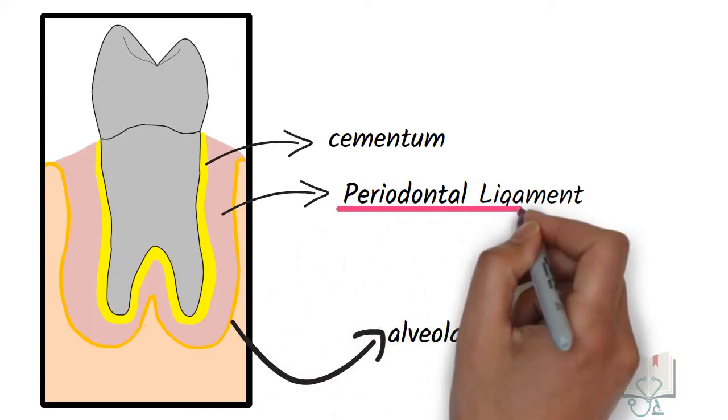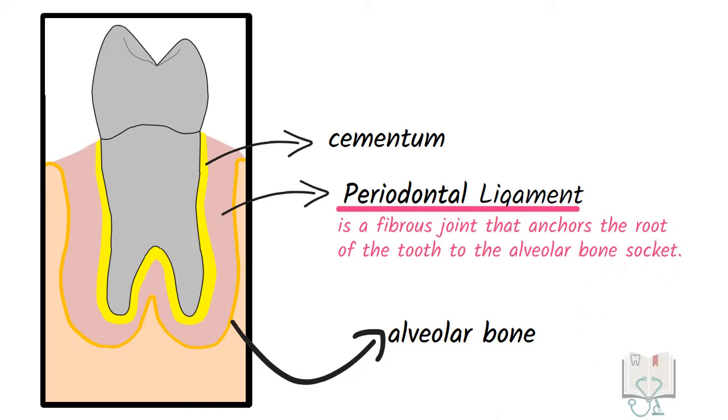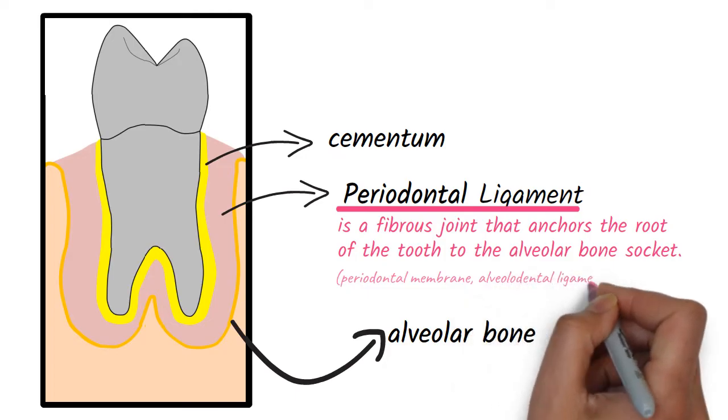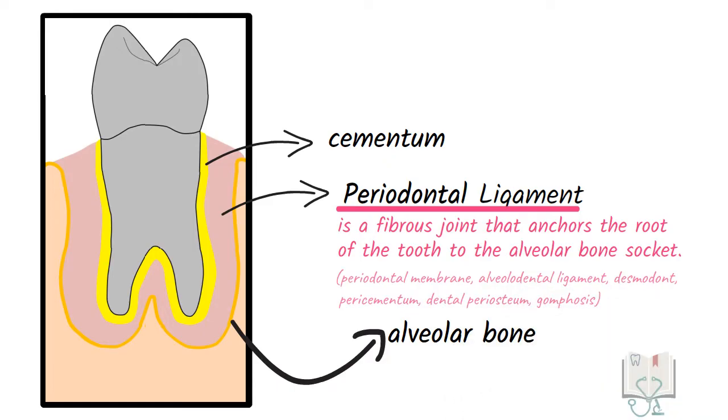So, periodontal ligament is a fibrous joint that anchors the root of the tooth to the alveolar bone socket. Its other names are periodontal membrane, alveolar dental ligament, desmodont, pericementum, dental periosteum, and gomphosis.